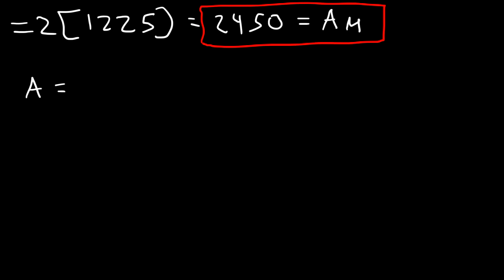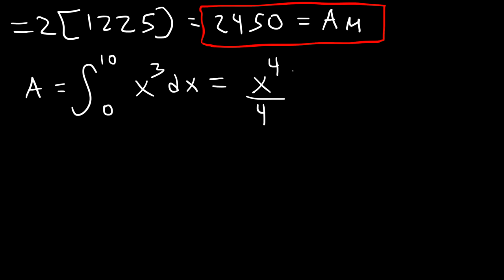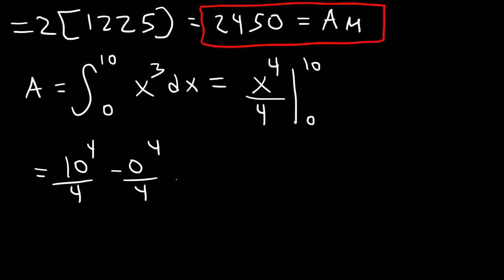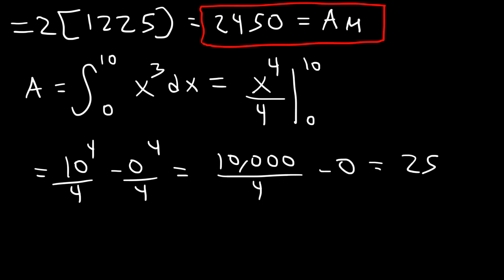Now let's get the exact area by calculating the definite integral of x cubed from 0 to 10. The antiderivative of x to the third power is x to the fourth power divided by 4. Evaluated from 0 to 10, this gives 10 to the fourth power over 4 minus 0, which is 10,000 divided by 4, equaling 2500. So 2450 and 2500 are pretty close to each other, confirming that the midpoint rule is a very good approximation of the area under the curve and can be used to estimate the value of a definite integral.